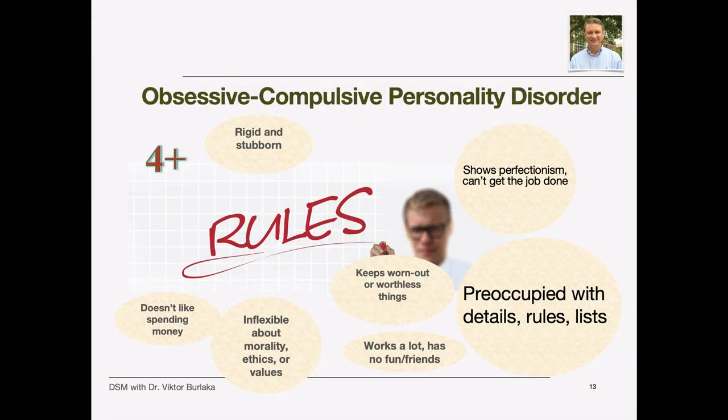People with obsessive-compulsive personality disorder are strongly focused on control, orderliness, and perfection. They can become so preoccupied with details, organization, and rules that they lose sight of the purpose of what they are doing. They tend to be inflexible and headstrong, trying so hard to be perfect that they might not be able to finish tasks. They can be exceedingly conscientious, rigid, or scrupulous about values, ethics, and morals. Many are workaholics, and some will not engage in work unless others do things exactly their way. It is not uncommon for them to hoard worthless items or be stingy with themselves and others.